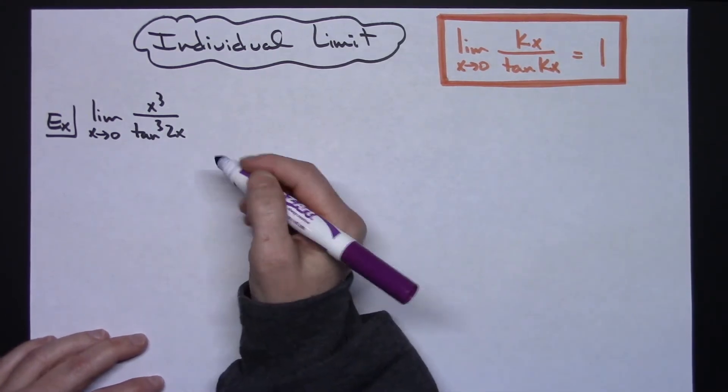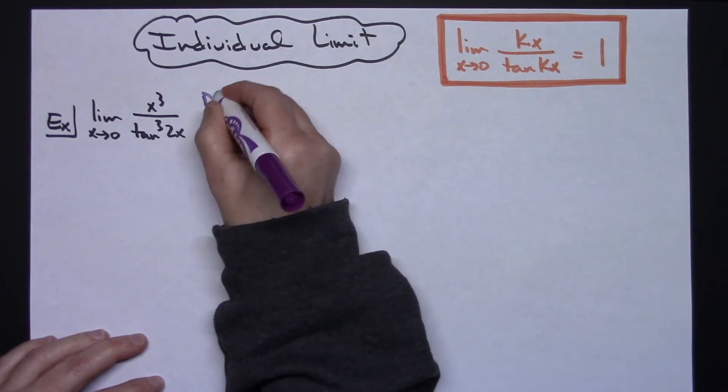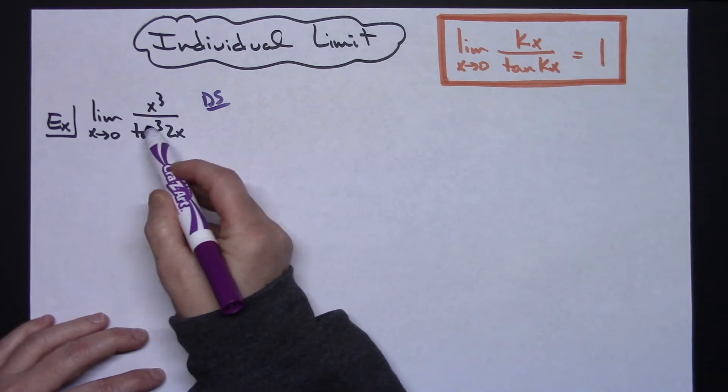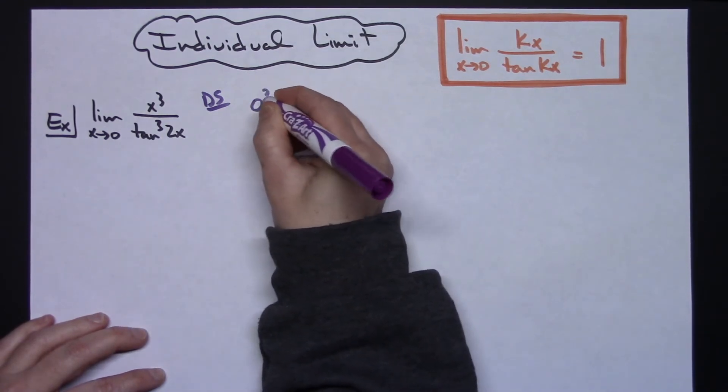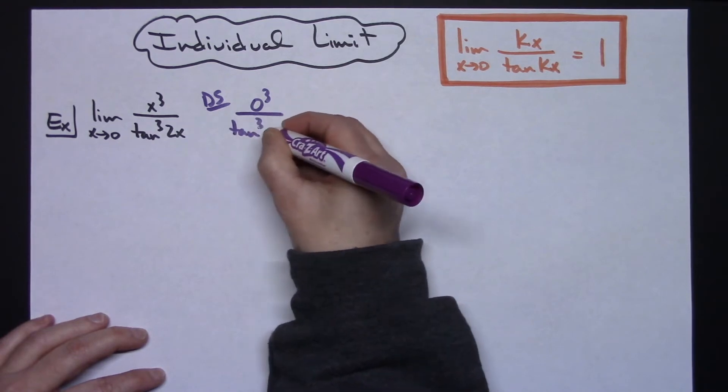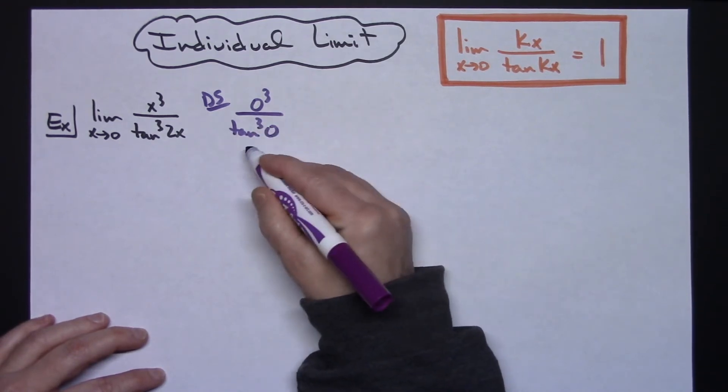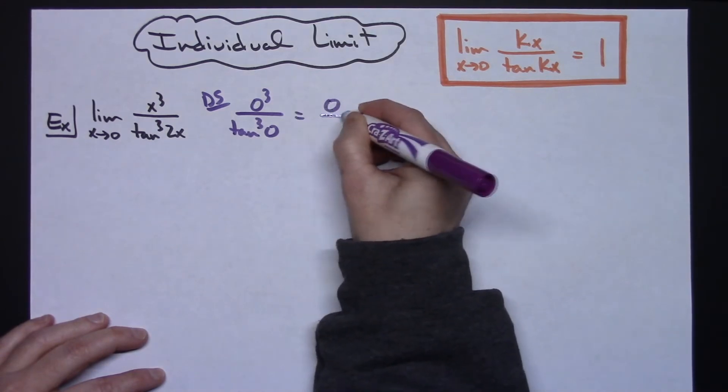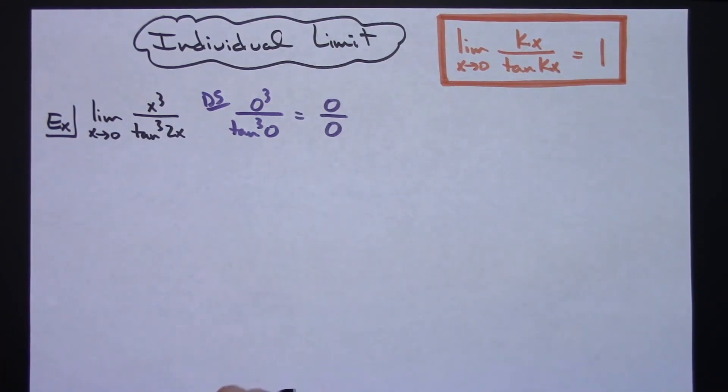So in this limit, the first thing that we're going to do is a direct substitution to make sure that we really have that indeterminate form. So I'm going to plug 0 in and that's going to give me 0 to the third on the top and then I'll have tangent cubed of 0 on the bottom. Tangent of 0 is 0, cubing it's still going to give me 0, so I have 0 over 0. So this limit does give us that indeterminate form.